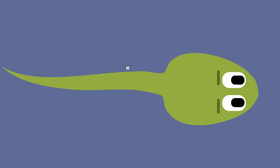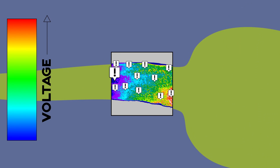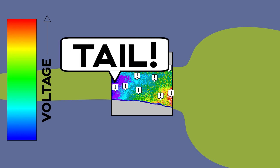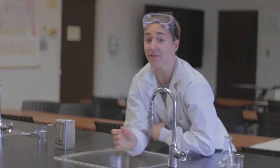Here's a tadpole stained with a voltage-sensitive dye. The cells are telling each other what to make and where to make it. The lower voltage areas might be signaling that a tail has to be there, and the higher voltage areas might be where a heart is being made. These electric patterns represent and store structures in the same way that the brain stores memories.